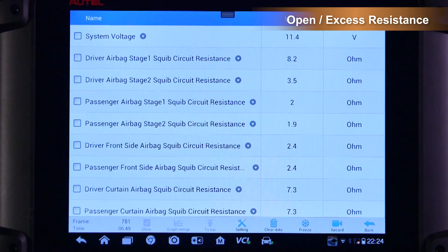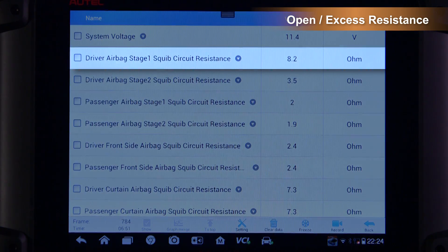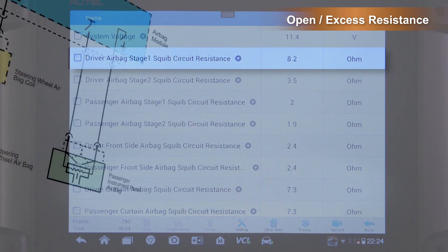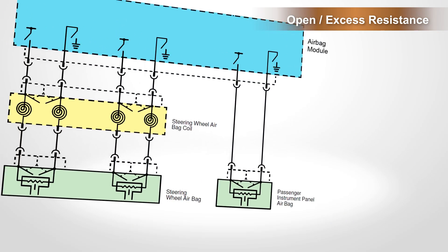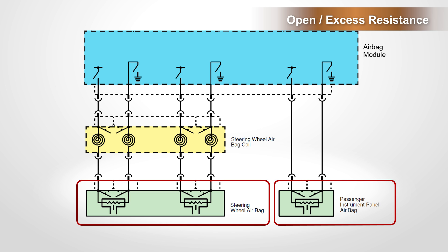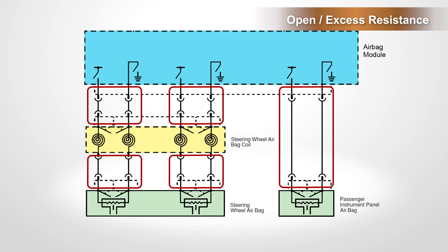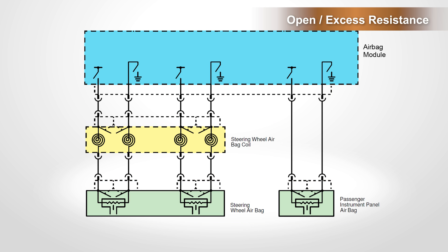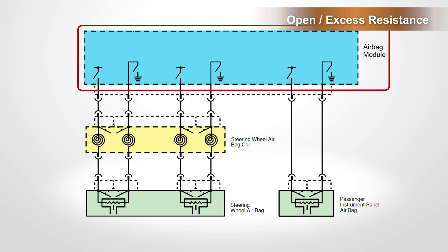If the resistance value is high on one of the squib circuits, it will be necessary to perform the following checks. We need to isolate the open or excess resistance to either the airbag assembly, harness and connectors, clock spring, or the SRS control module.